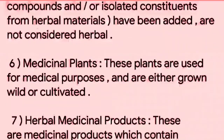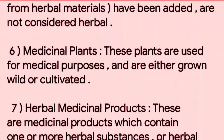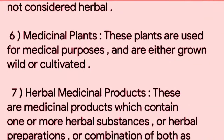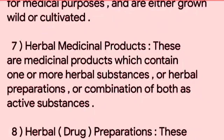6. Medicinal Plants: These plants are used for medical purposes, and are either grown wild or cultivated. 7. Herbal Medicinal Products: These are medicinal products which contain one or more herbal substances, or herbal preparations, or combination of both as active substances.